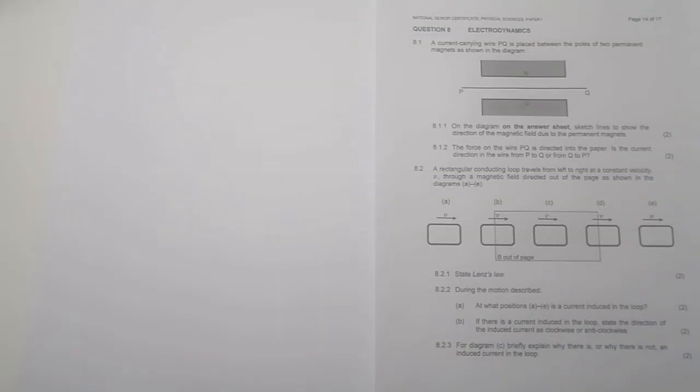So let's get into the question. First of all, they're giving us a current-carrying wire PQ placed between two permanent magnet poles, as shown in the diagram. The first question asks us to sketch lines on the diagram to show the direction of the magnetic field due to the permanent magnets. Remember that magnetic field will always move from north to south.